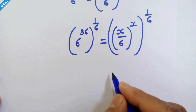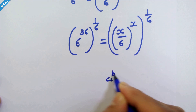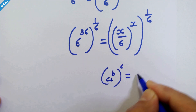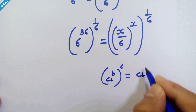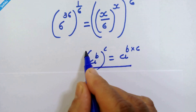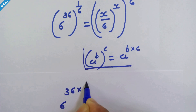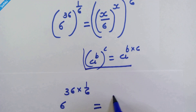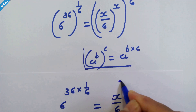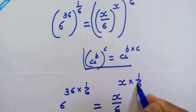Now let's remind this rule: if a raised to b, whole raised to c, then we can write a raised to b into c. By applying this rule here, we can write 6 raised to 36 into 1 upon 6 is equal to x upon 6, whole raised to x into 1 upon 6.